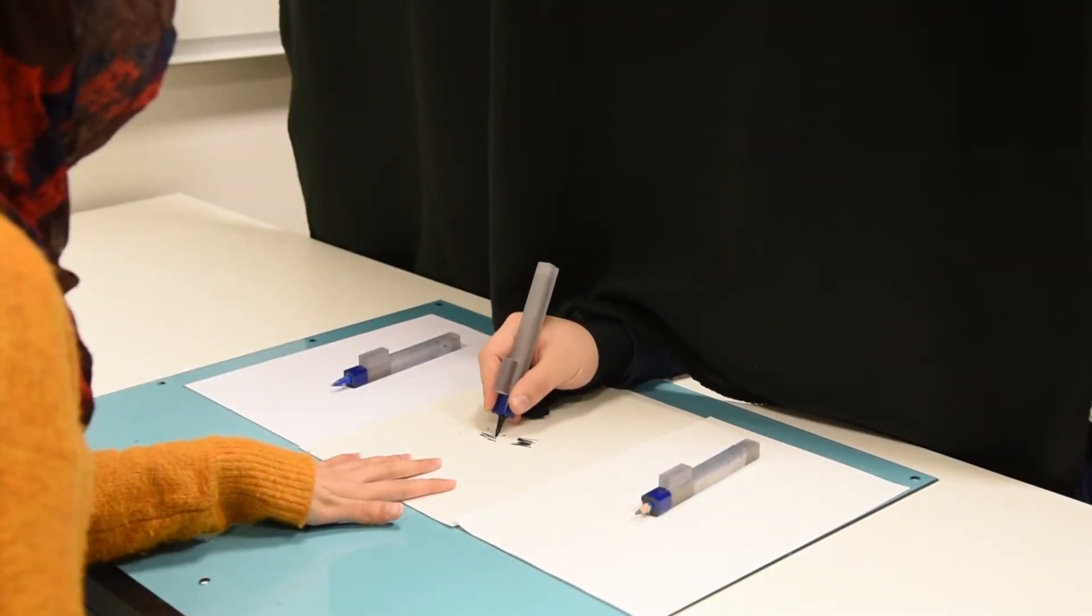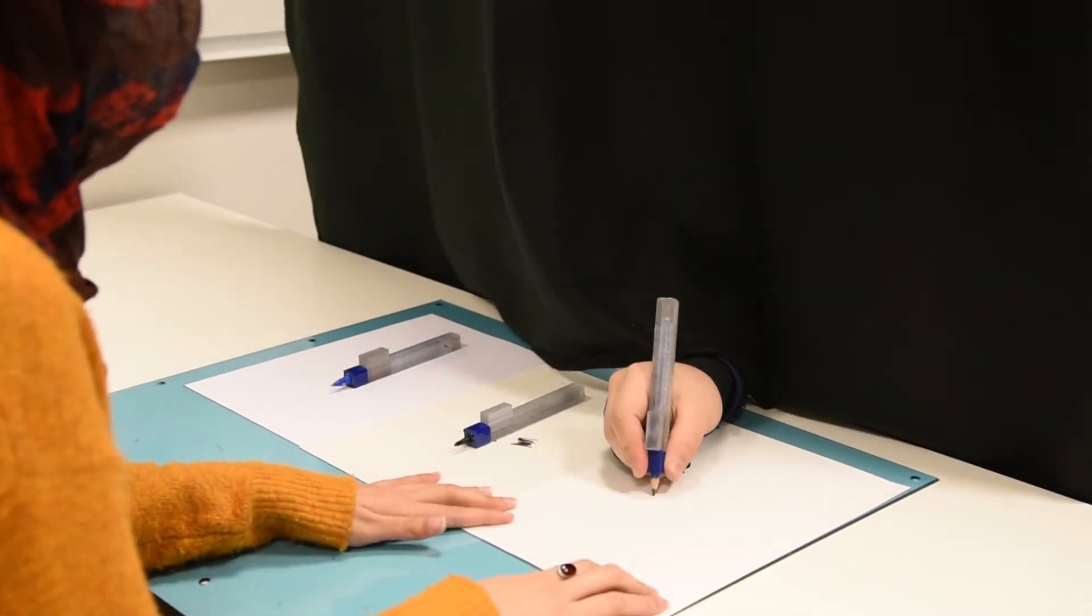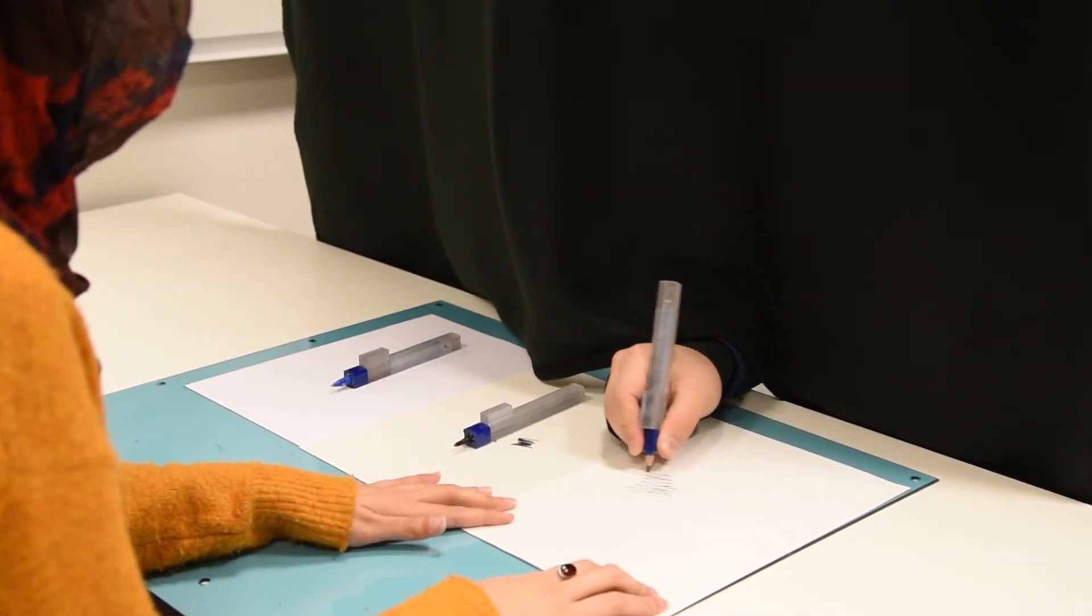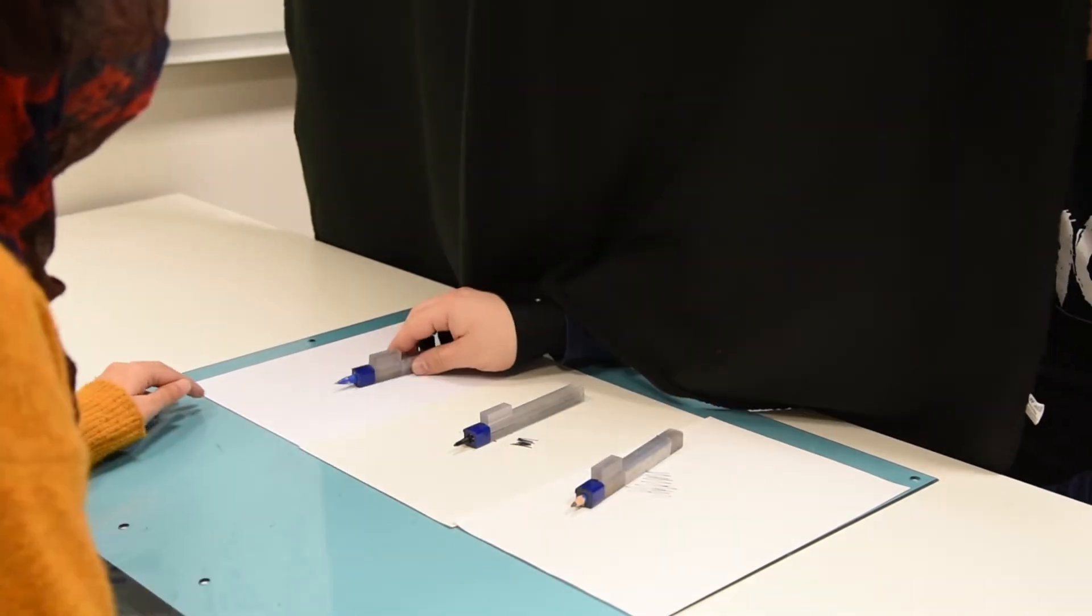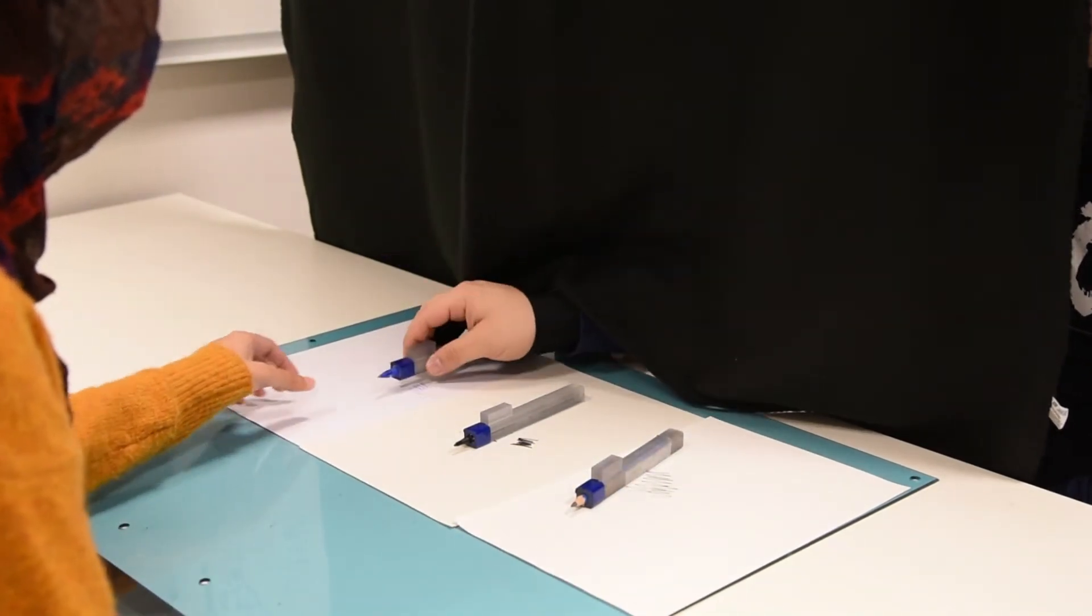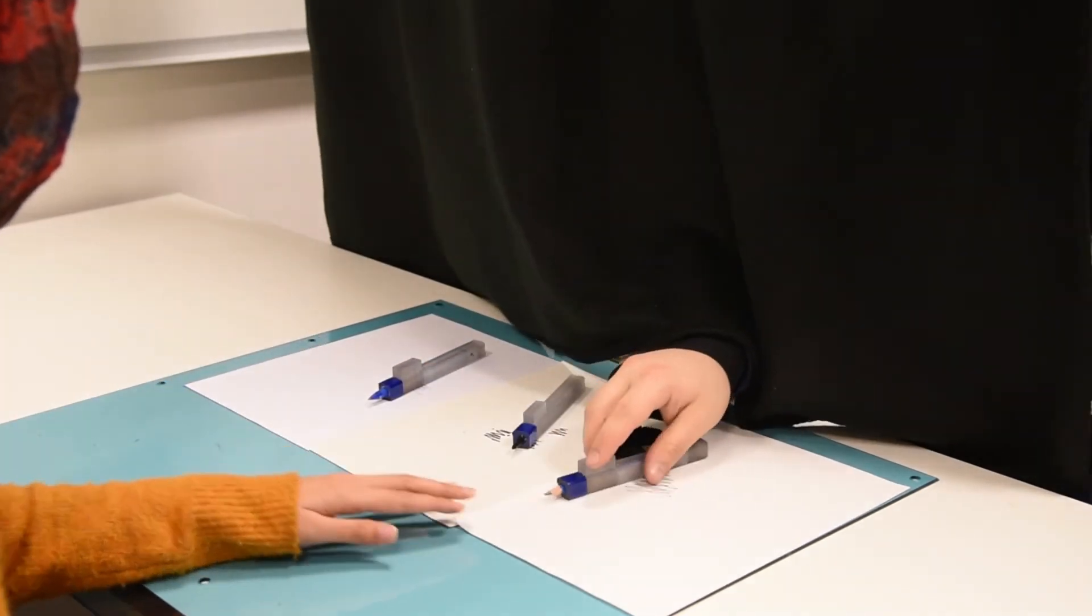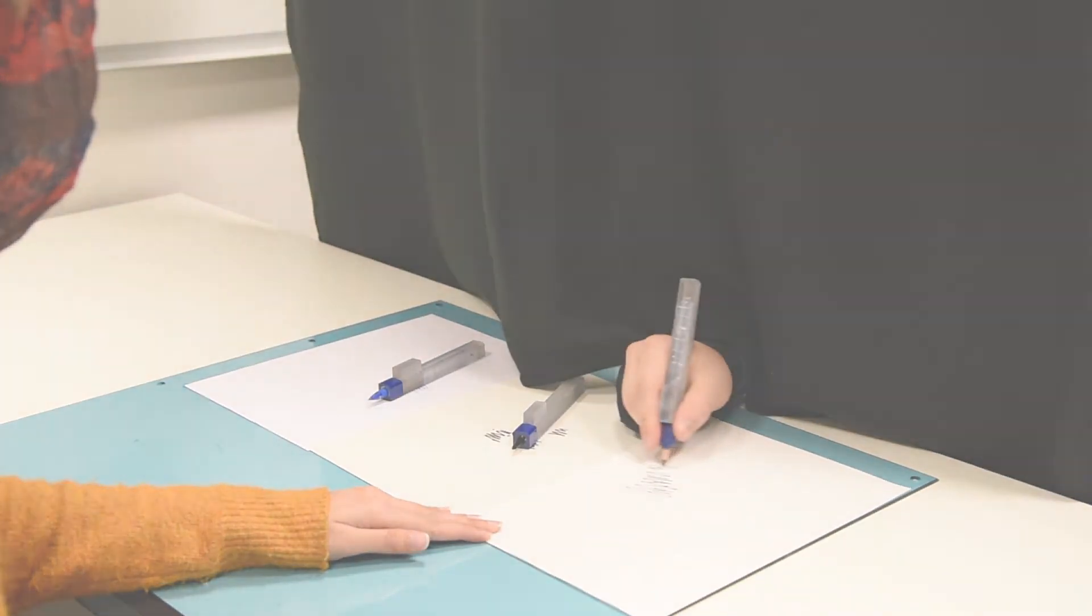We validate our findings in a user study. We populate the space with new samples and run a variation of our original experiment. The users again have a forced choice from a triplet, but this time we allow for free drawing. Even in such a challenging case, we can still well predict the choices our participants will make.